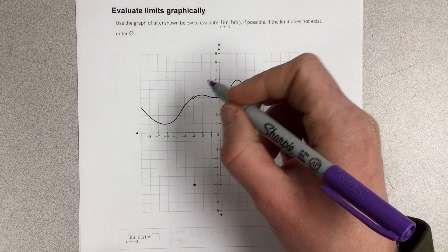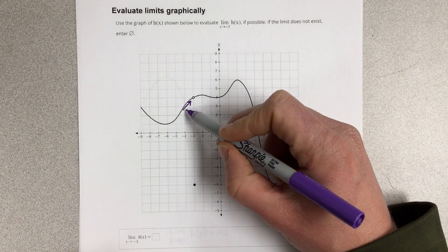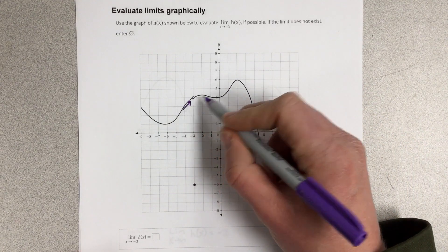Well if we look at the left and right hand limits, so if we look from the left as we approach negative 3, you can see that the function is approaching a y value of 4.